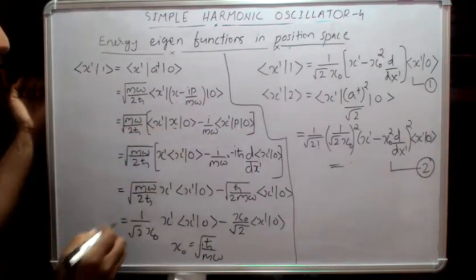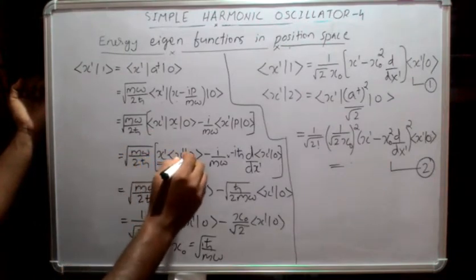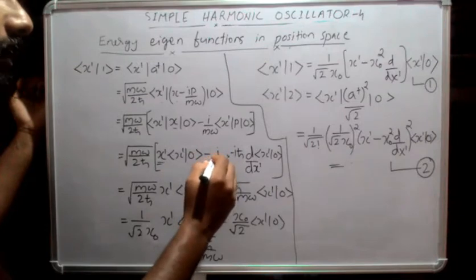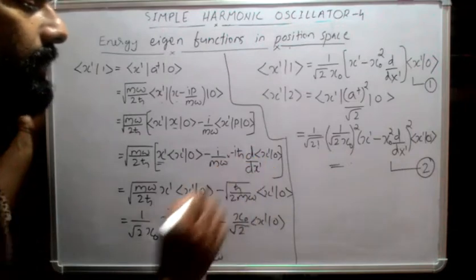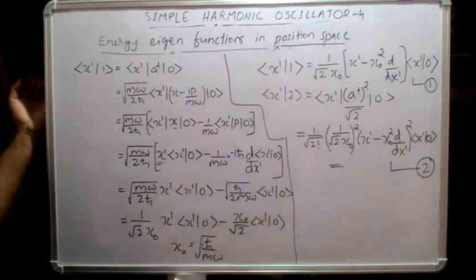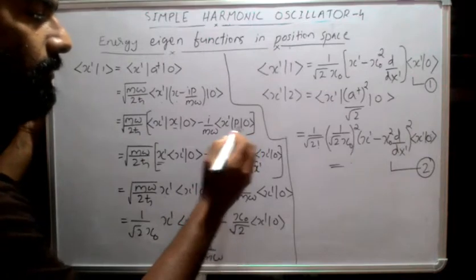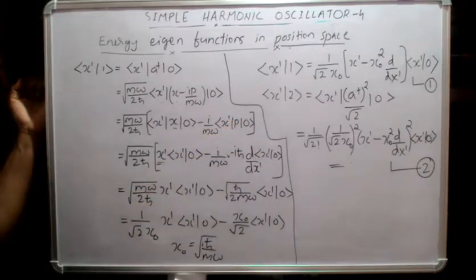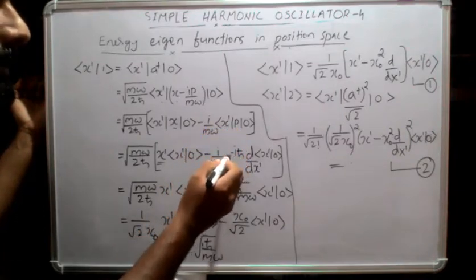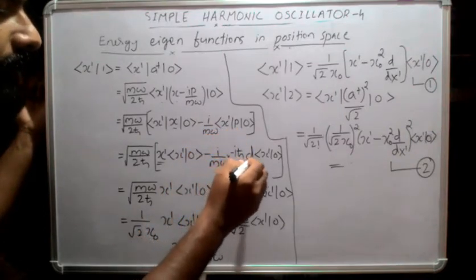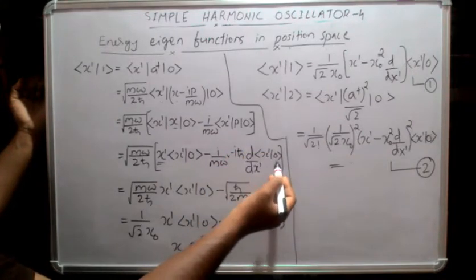If x̂ operates on |x'⟩ we get the eigenvalue x'. So we can write x' times ⟨x'|0⟩ minus i over m·ω times the momentum operator in position basis, which is -iℏ d/dx', acting on ⟨x'|0⟩.